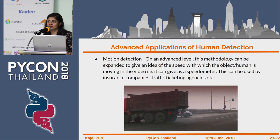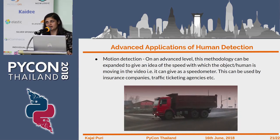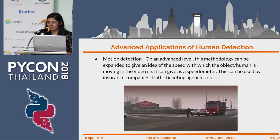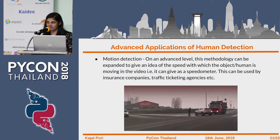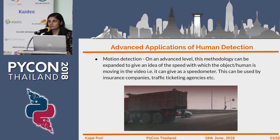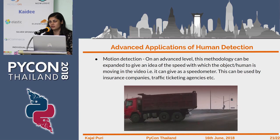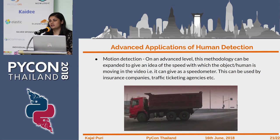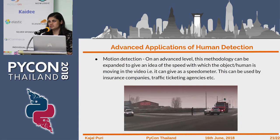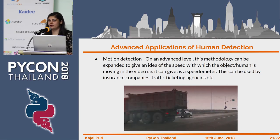The third application is motion detection, an advanced application of human detection. Using this methodology we can estimate with what speed an object or vehicle is moving in a video — it can work as a rough speedometer estimator. This is mainly used by insurance companies to know if trucks or cars were exceeding their speeds, or by traffic ticketing agencies to cut tickets for people exceeding speed limits. I haven't seen much usage of this yet but I think in future we will see a lot more automated motion detection.